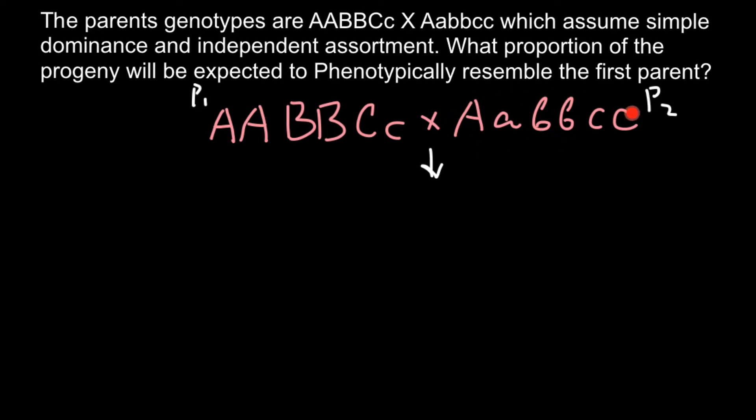Each allele is found on different homologous chromosomes — one inherited from the mother, one from the father. Parent 2 is heterozygous for gene A, homozygous recessive for gene B, and homozygous recessive for gene C. Because this is simple Mendelian genetics with independent assortment, we assume these three genes are on different chromosomes and calculate probabilities independently.